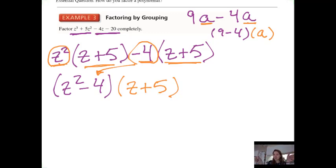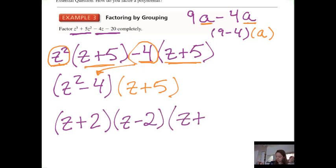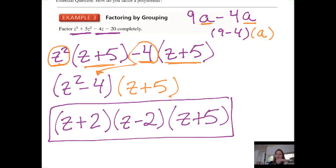This is not completely factored yet because we do have a difference of two squares. So let's finish this up. z squared minus 4 can be written as z plus 2 times z minus 2, and I bring down the z plus 5. And now this polynomial is completely factored.